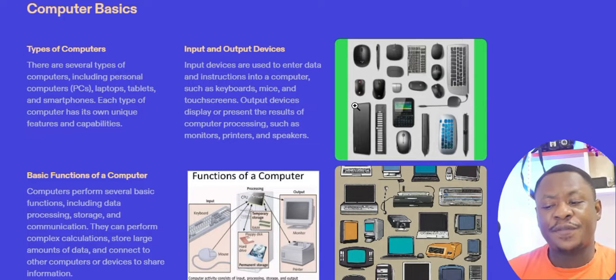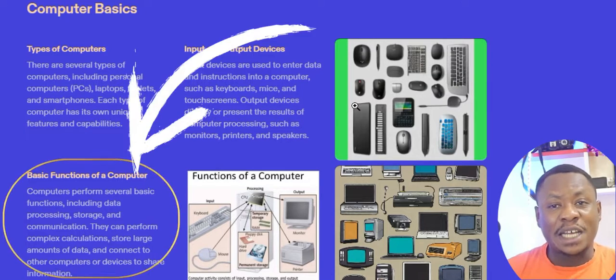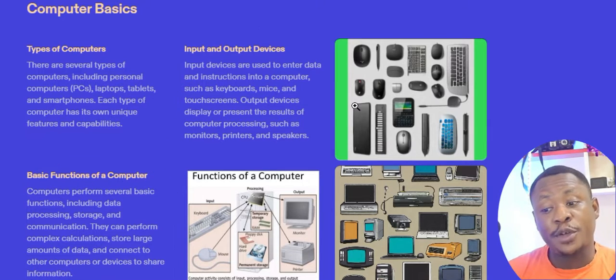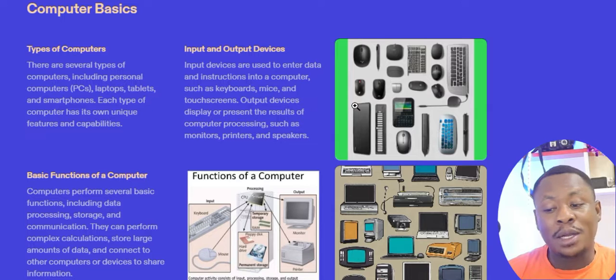Computers perform several basic functions including data processing, data storage, and communication. They can perform complex calculations, store large amounts of data, and connect to other computers or devices to share information. So computers process data, store data, and also help us connect with other people around the world to share resources and information.